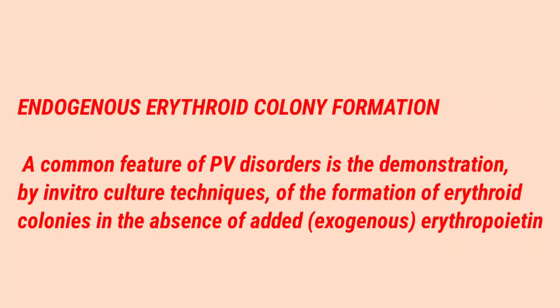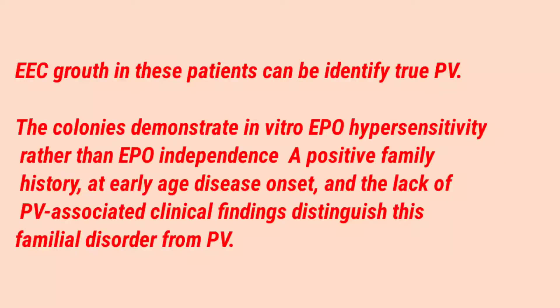Because the cells are proliferating on their own, they don't need erythropoietin. When we collect cells from bone marrow and place them in a culture medium, the cells proliferate without any erythropoietin. This endogenous erythroid colony formation is seen in polycythemia vera and is one of the diagnostic criteria.